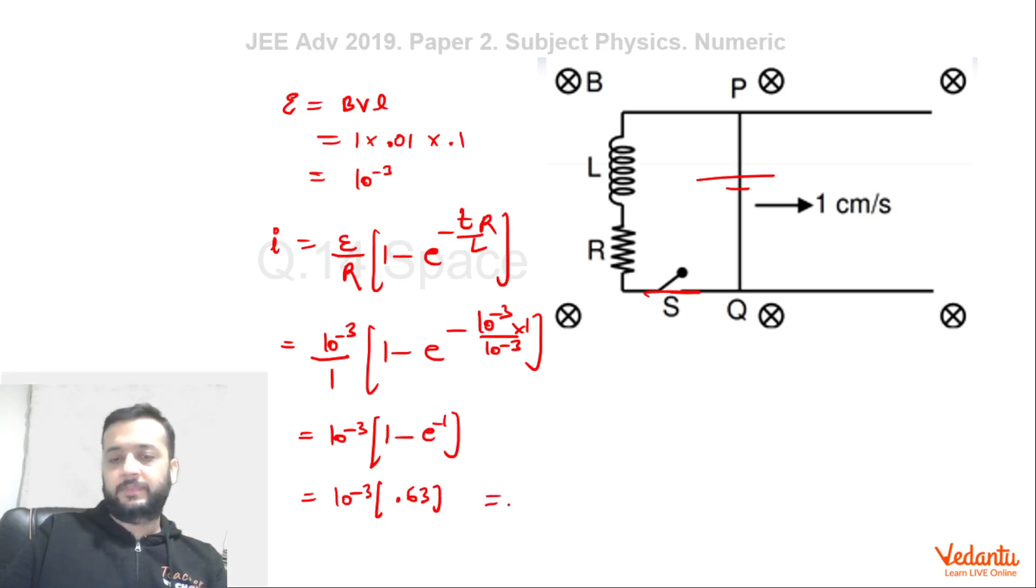So this is 0.63 and hence we can say that current in milliamperes is nothing but 0.63 itself. So x will be equals to 0.63.